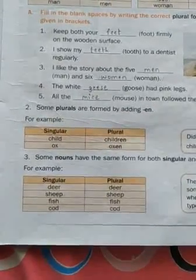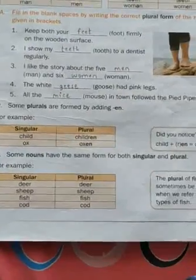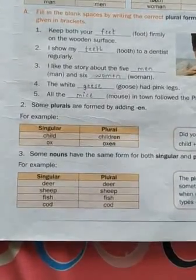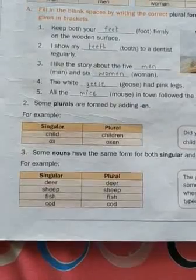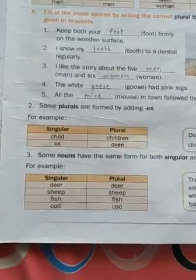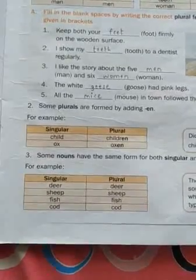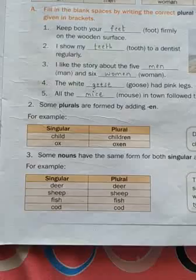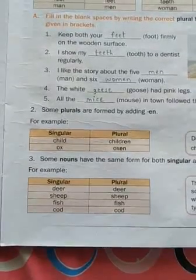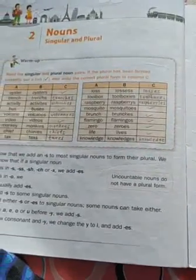The next rule: some nouns have the same form for both singular and plural — they never change. For example, 'deer' is singular and also remains 'deer' in plural; 'ship' remains 'ship'; 'fish' remains 'fish'; 'cod' remains 'cod.' In this way we saw some rules for singular nouns to make them plural.